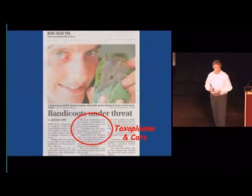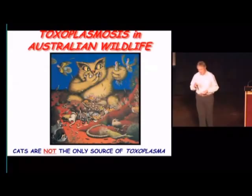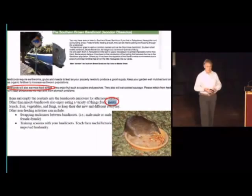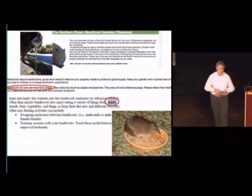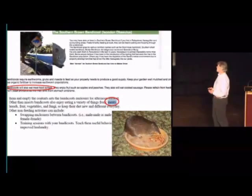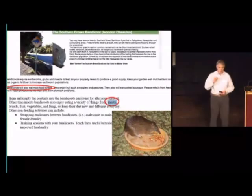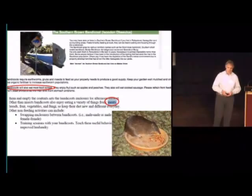People love having bandicoots in their back garden — they feed them and put food out for them. So cats are not necessarily the only source of Toxoplasma in these bandicoots. If you go on the internet there are many sites with information for people who want to encourage bandicoots into their gardens. A lot of the advice is good, but I found two sites that said it's okay to put out food scraps for your bandicoots — even meats. One of our colleagues at work has parents who actually put out little bits of raw mutton for the bandicoots to eat. That is undoubtedly the most common way in which these animals are getting Toxoplasma.